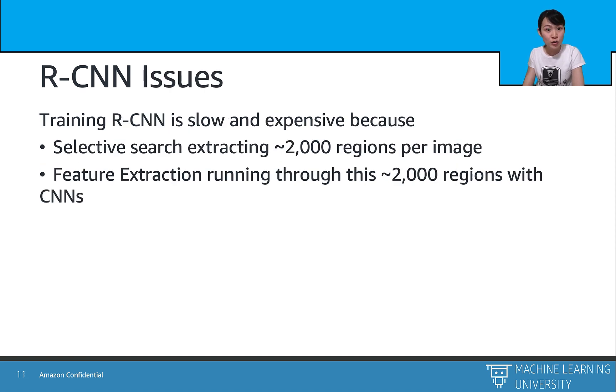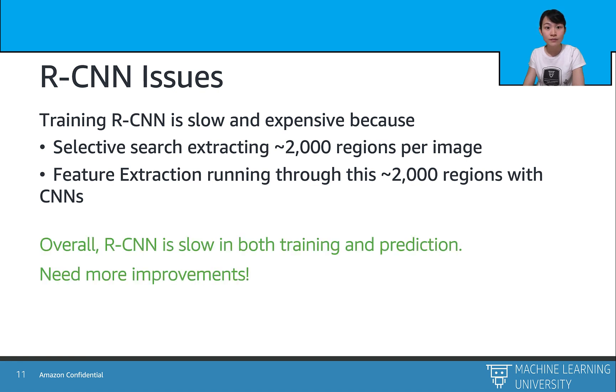However, train and predicting using R-CNN is still slow and expensive. The major reason comes from the selective search step, where it's selected about 2,000 regions for one image. And then the pre-trained convolutional neural networks need to extract feature for these 2,000 regions and train a model on them. And that's why we need further improvements on both training and prediction steps.